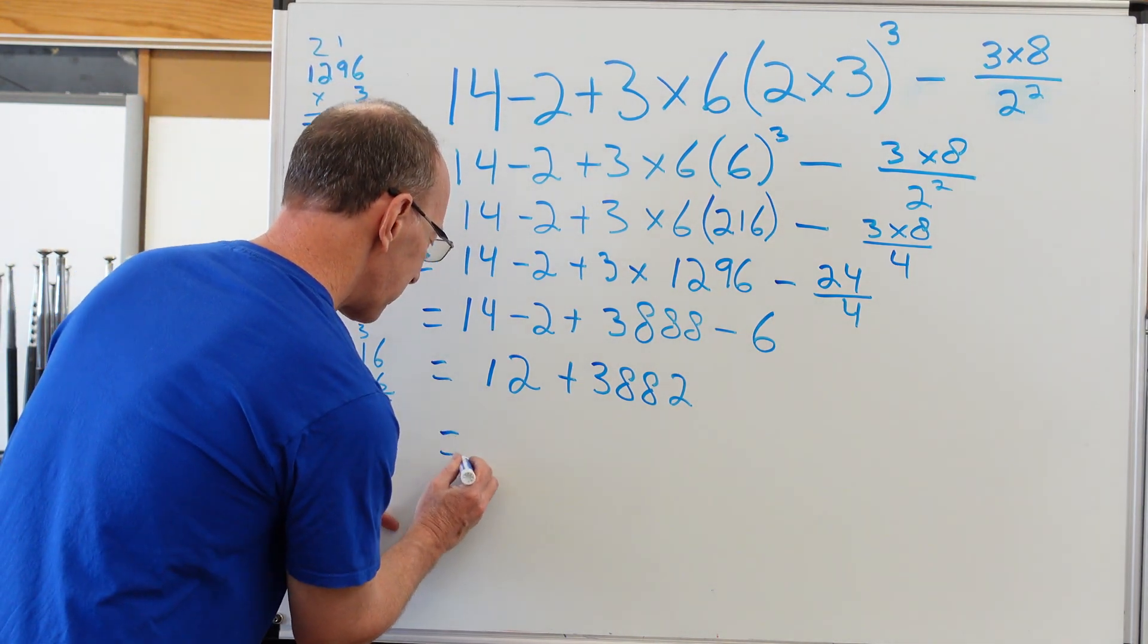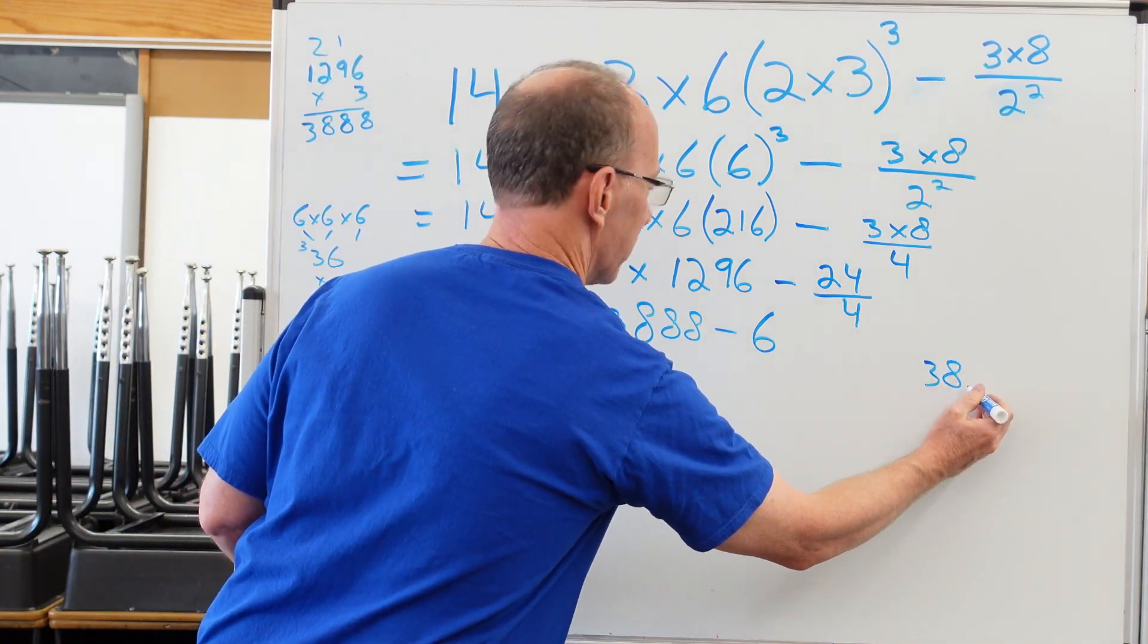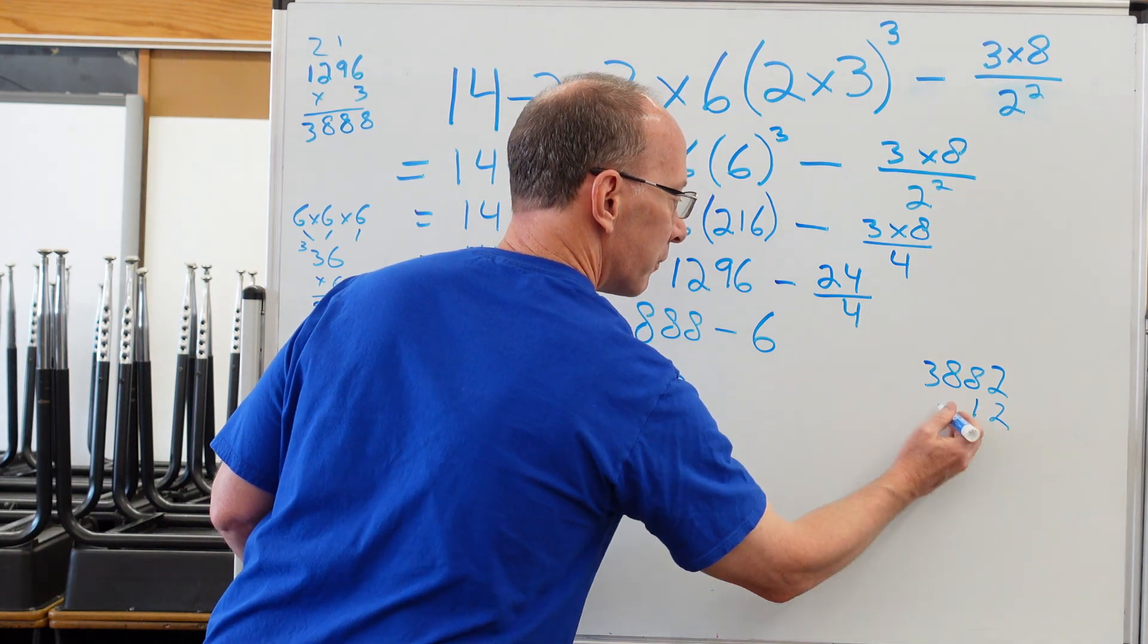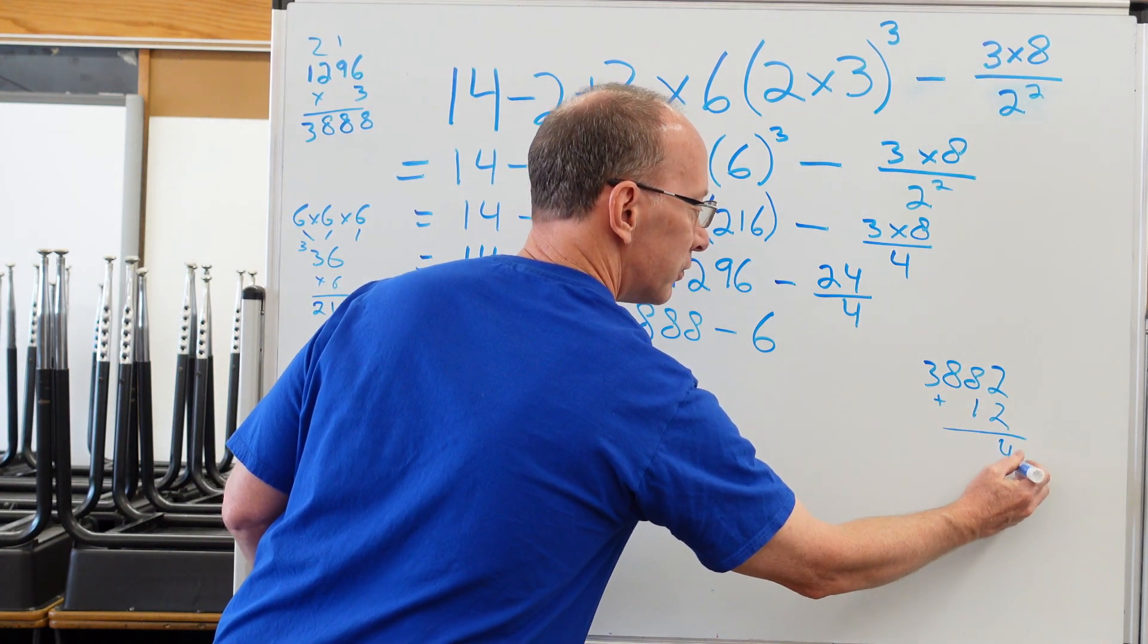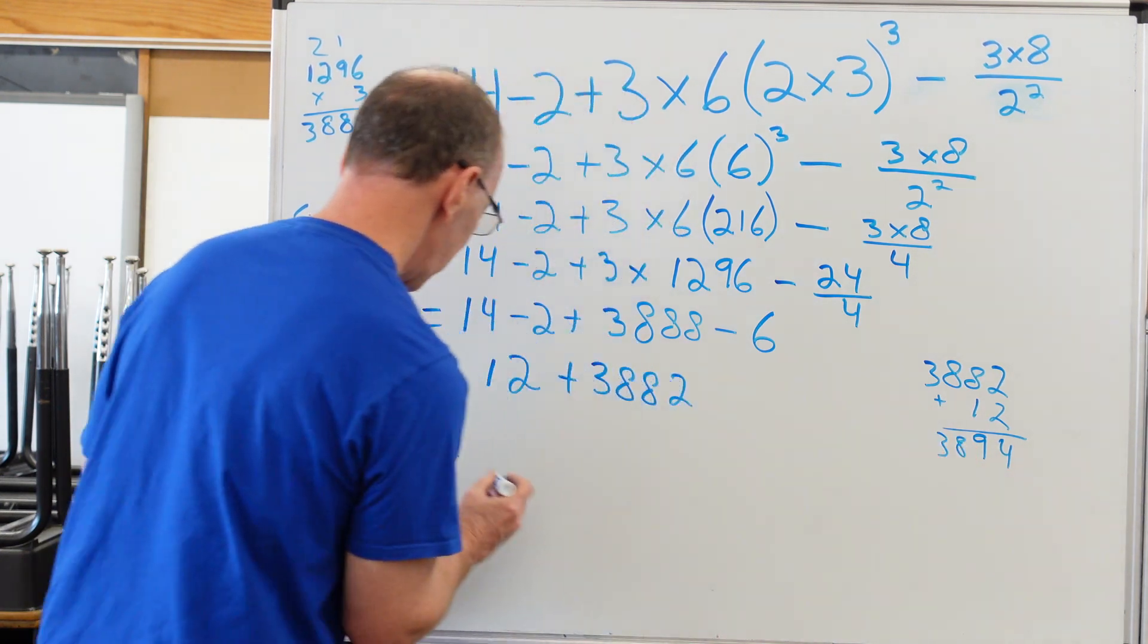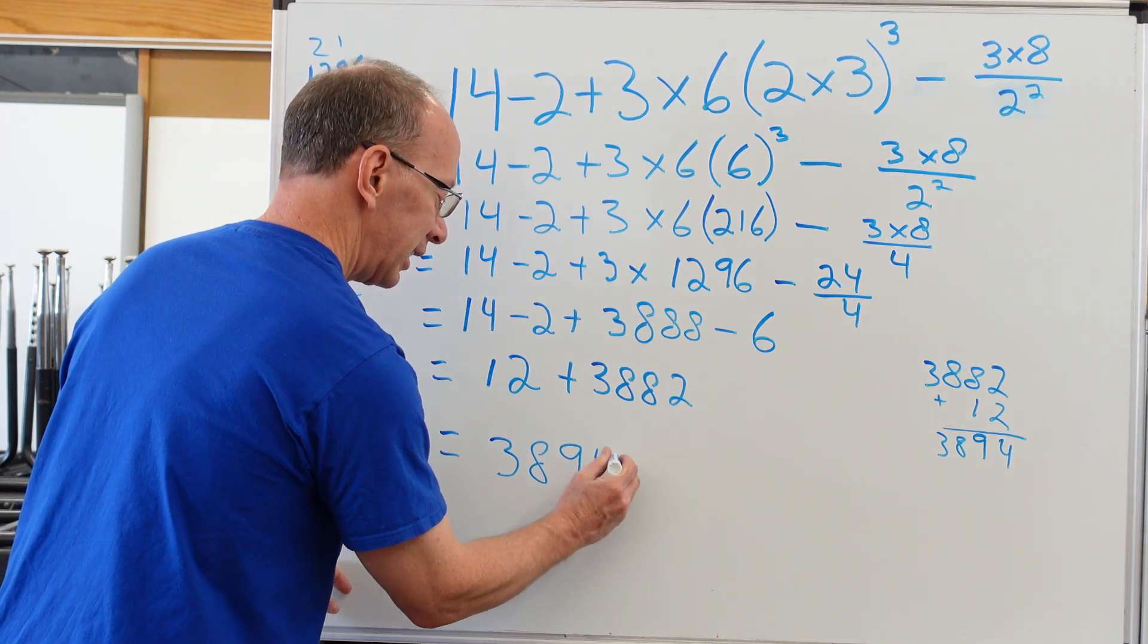So I have 3,000, 300, 3,882 and 12. So I have two plus two is four. Eight plus one is nine. Bring the eight down and three. So our answer is 3,894. Did you get that?